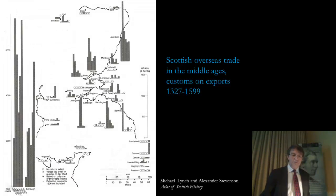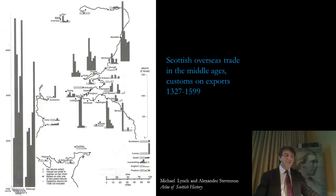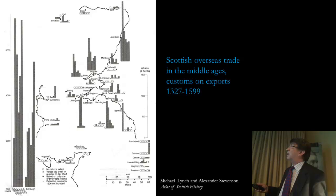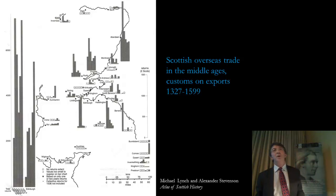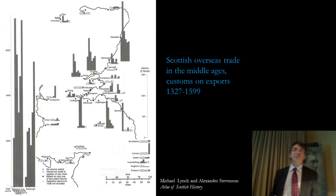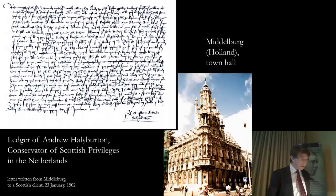Another splendid map put together by Michael Lynch and Alexander Stevenson for the Atlas of Scottish History reminds us graphically about the extent and importance of Scottish overseas trade based on customs returns between 1327 and 1599, where you can see very clearly that all of the Scottish trading ports were on the east coast. We've got Aberdeen, Dundee, Perth, Edinburgh, Haddington, and several others, all carrying out a very active trade with mainland Europe and particularly with the Low Countries.